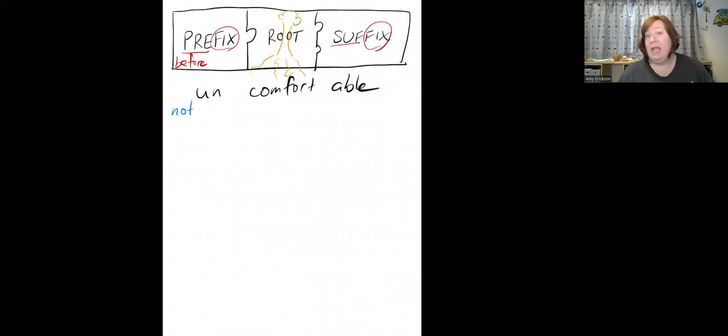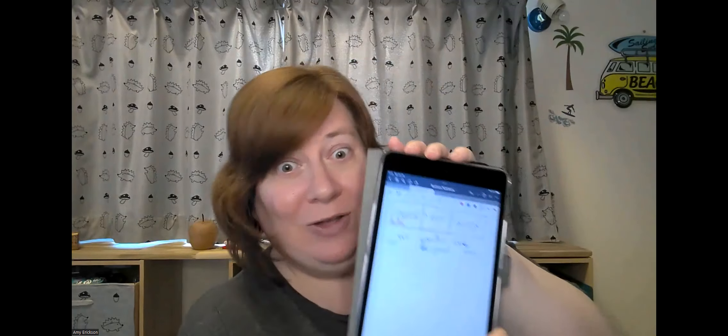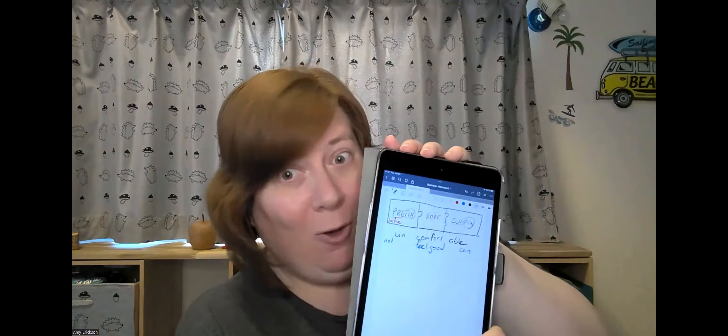So let's examine a word that has a prefix, a root, and a suffix. If we have this word here — uncomfortable. So we have 'un', which means not. 'Comfort' means feel good. And 'able' — another word for that is 'can'. So: cannot feel good — uncomfortable.